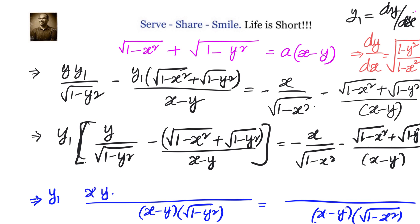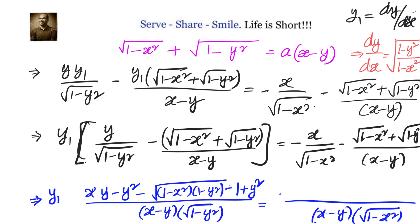Expanding fully: left numerator is xy minus y² minus √(1 minus y²)·√(1 minus x²), then minus 1 plus y². Right side numerator is minus x² plus xy, then minus 1 plus x², minus √(1 minus x²)·√(1 minus y²). We can cancel (x minus y) from both denominators, and also cancel the y² term on the left and x² term on the right.